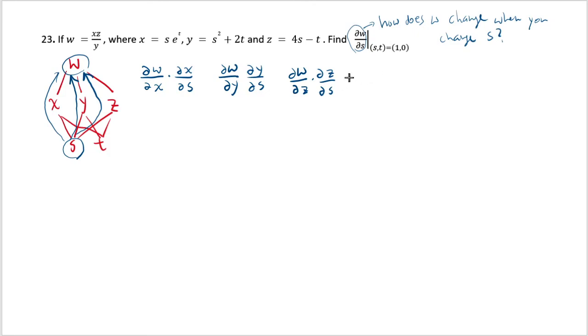And the miraculous thing about the multivariable chain rule is that if you want to know how w changes when you change s, you just think about all the possible paths between the two variables and compute their rate of change going through each path and adding them up gives you the total rate of change. So this is the chain rule that comes from this dependence diagram. So let's try to calculate this.